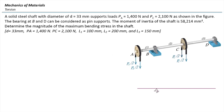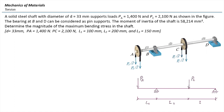We have one pin support at point B and another pin support at point D. There will be two forces acting on the beam — a downward force P_A and another force P_C. The dimensions are given, the moment of inertia of the shaft is also provided, and we know the length for each part: L1, L2, and L3.